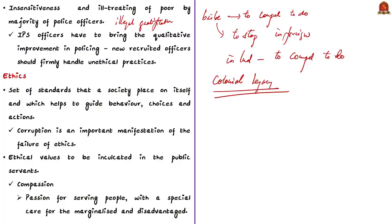This is where the bureaucrat's role comes in. IPS officers have to bring qualitative improvement in policing. Wherever an officer sees injustice or violence against unsuspecting citizens, they have to protest and object. By doing so, they can instill a sense of equality before law in both juniors and seniors. The author means that newly recruited UPSC officers should firmly handle such unethical practices.